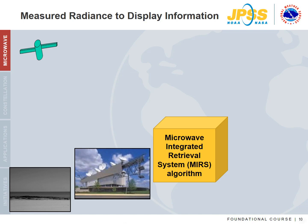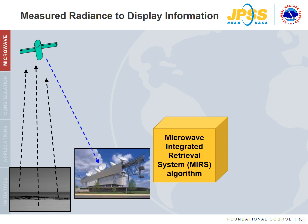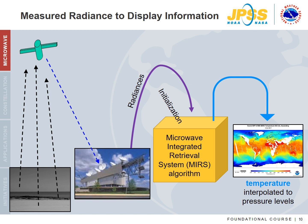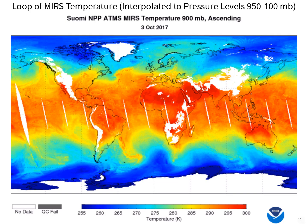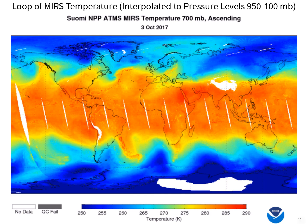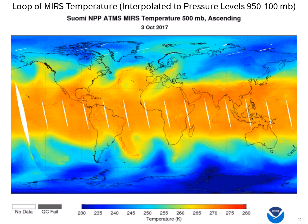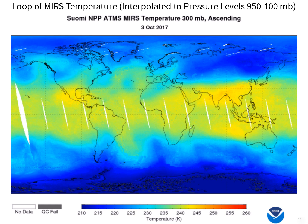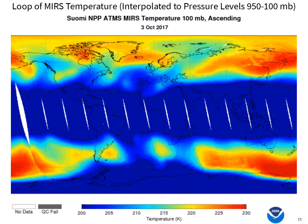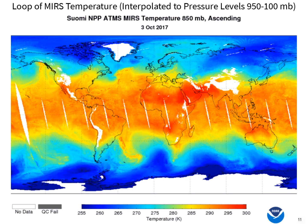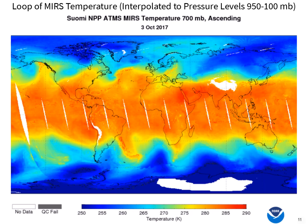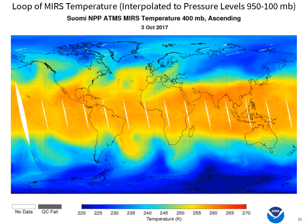Let's take a simplified look at how this information is processed. Microwave radiance is sensed by the satellite and transmitted back to Earth. The microwave integrated retrieval system is initialized for the radiance values to be incorporated. The outcome is temperature interpolated to pressure levels. This is a loop showing MiRS temperature retrievals displayed on pressure levels from 950 to 100 millibars used in vertical temperature profiles. This type of information is also assimilated into numerical weather prediction models. Links are provided for the animation and archived imagery.